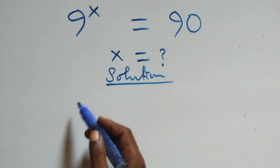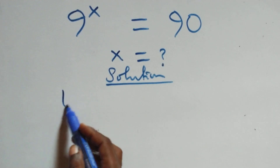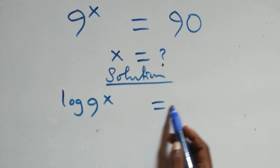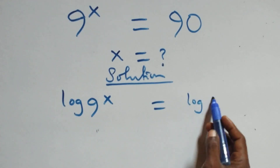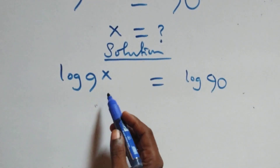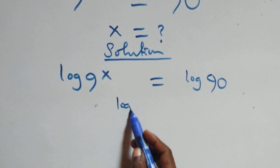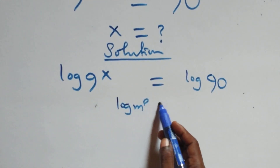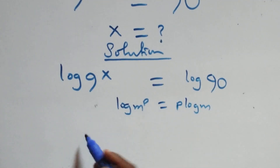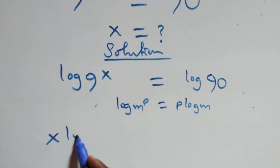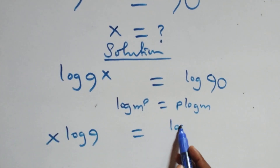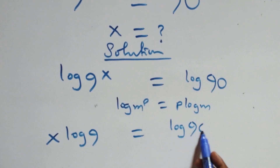What we have here, we take the log on both sides. We have log 9 raised to power x equals to log 90. We apply the power of logarithm: when we have log n raised to power p, this is the same thing as p log n. So we have x log 9 equals to log 90.